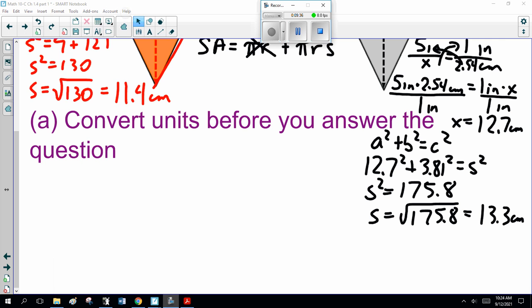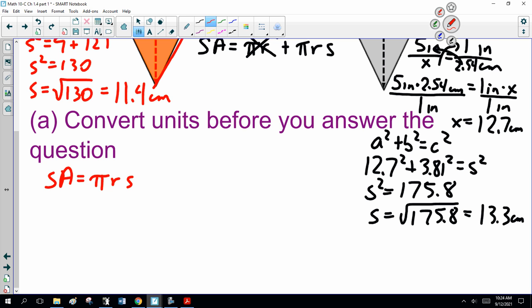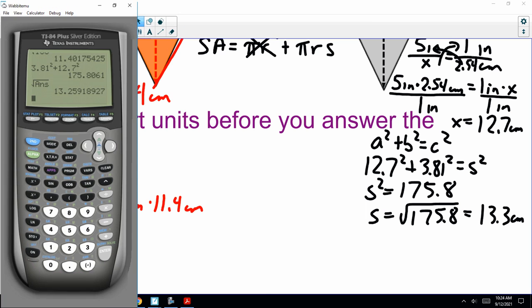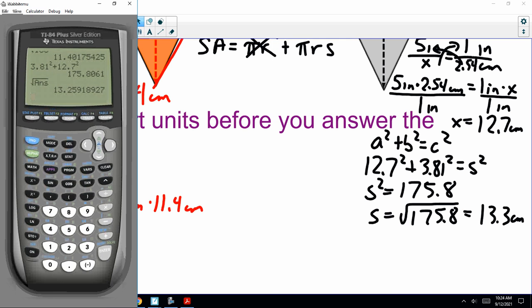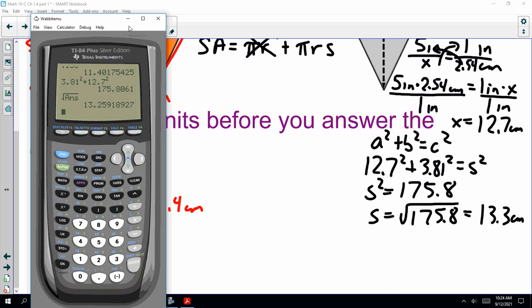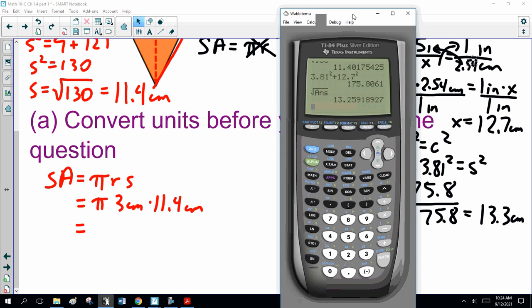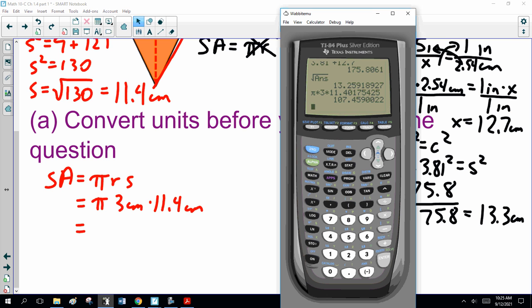So, here, we have to compare the surface area of the sides. πrs for both of them. So, for the first one, π times the radius, which is 3 centimeters, times 11.4 centimeters. Now, 11.4. I scroll up, so I don't type the numbers in again, because I'm lazy. 107.5 square centimeters.